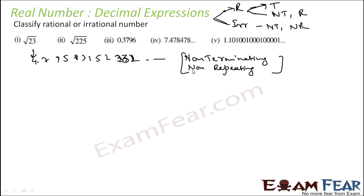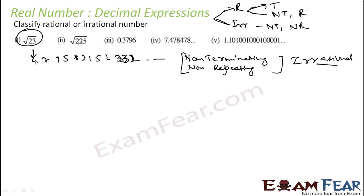Since root 23 is non-terminating and non-repeating, it is irrational. The second is root 225, and that value is 15. 15 is terminating, so since it is terminating, root 225 equals 15 is a rational number.